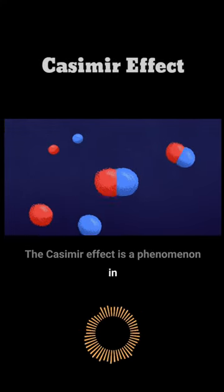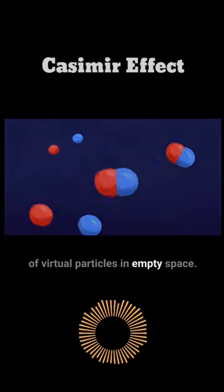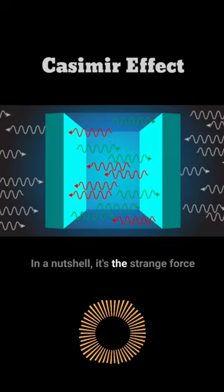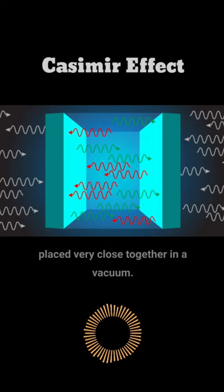The Casimir effect is a phenomenon in quantum physics that arises from the behavior of virtual particles in empty space. In a nutshell, it's the strange force that exists between two uncharged conductive plates placed very close together in a vacuum.